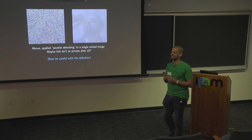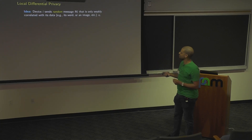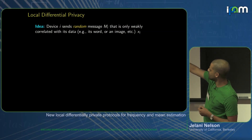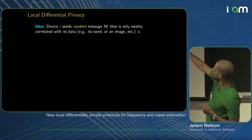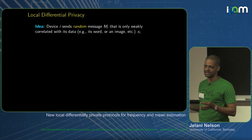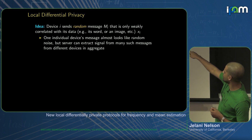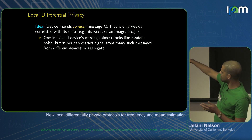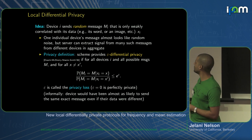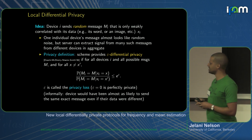We're going to use local differential privacy. The idea is that device i sends some random message m sub i that is only weakly correlated with its data x sub i. X sub i could be the picture of me with a bottle or a picture of a cat. One individual's device should look like random noise almost, but such that the server can extract signal in the aggregate.